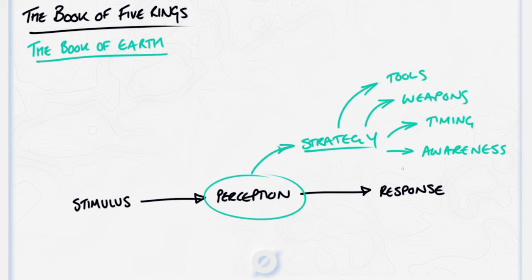In strategy, there are various timing considerations. From the outset, you must know the applicable timing and the inapplicable timing. And from among the large and small things, and the fast and slow timings, find the relevant timing. First seeing the distance timing and the background timing. This is the main thing in strategy. It is especially important to know the background timing, otherwise your strategy will become uncertain.